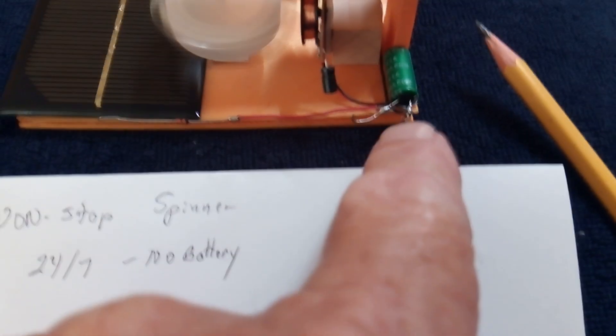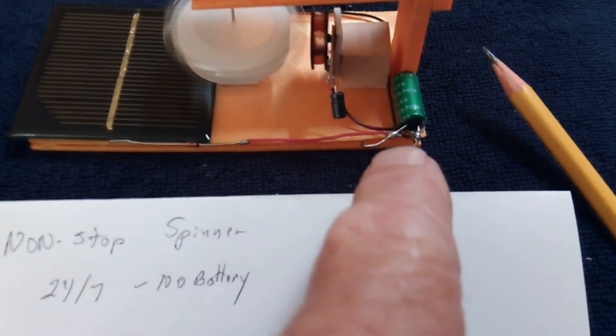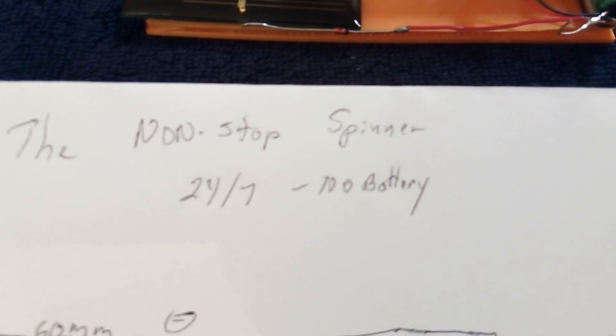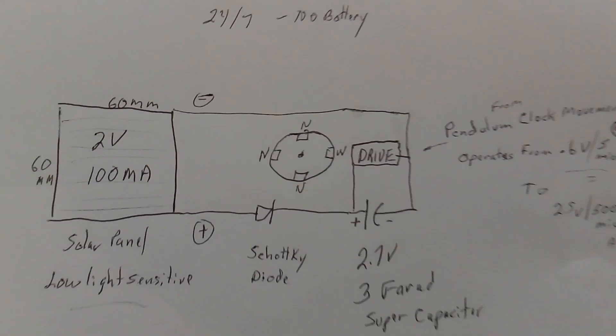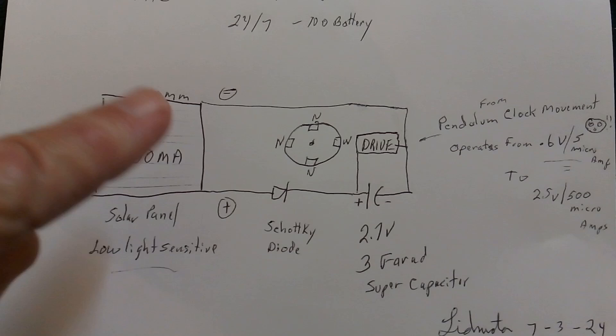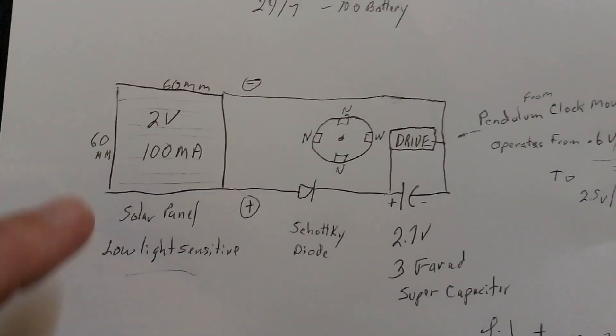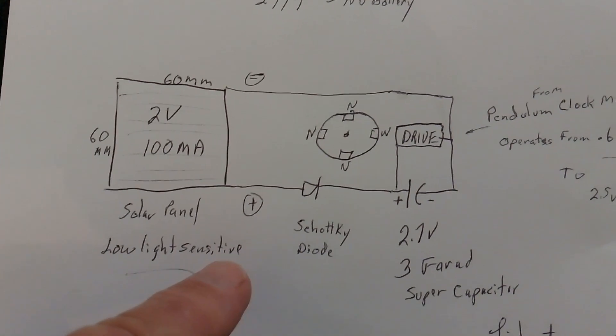This is the setup right here. You're gonna need a 2 volt at least 100 milliamps solar panel. Low light sensitive. Now in low light this will charge the super cap when it's low.